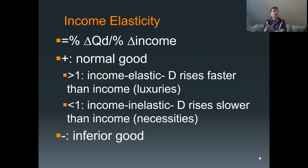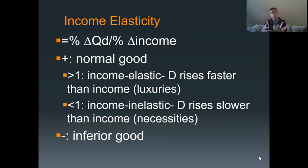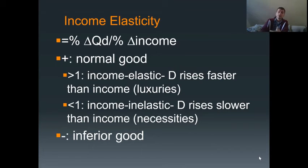If it is negative — if income increases and the quantity demanded decreases — that means it's an inferior good, which makes sense given the relationship we set up for inferior goods previously.